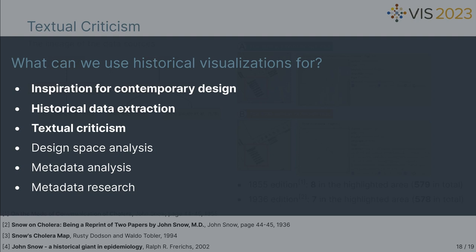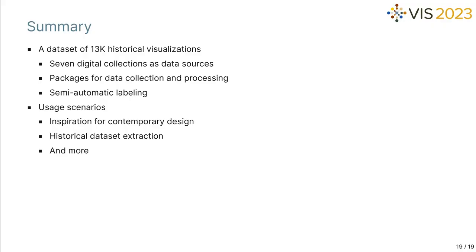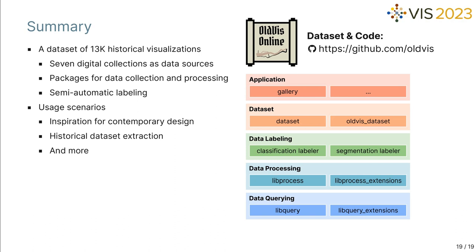In addition to the three usage scenarios I mentioned, you can find more in our paper. Our preliminary answer to the second question is that there are at least 6 types of usage scenarios. To summarize, we proposed a dataset of 13,000 historical visualizations, used online digital collections as data sources, and developed Python packages for data collection and processing. We carried out a semi-automatic labeling process to filter non-visualization images, and analyzed usage scenarios such as inspiring contemporary design and extracting historical datasets. You can find our dataset and code in our GitHub organization. Our repositories are split into five layers: data querying, data processing, data labeling, dataset, and application. Thank you, that's all for my presentation.